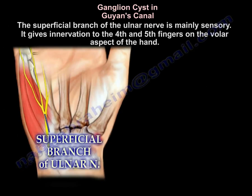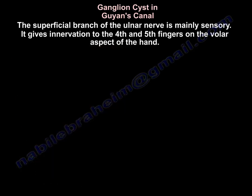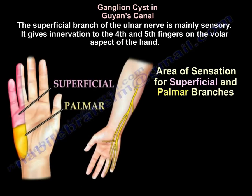The superficial branch of the ulnar nerve is mainly sensory and it gives innervation to the fourth and fifth fingers on the volar aspect.